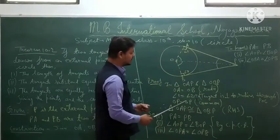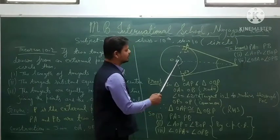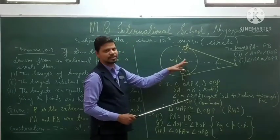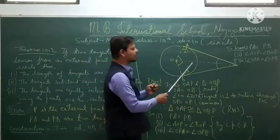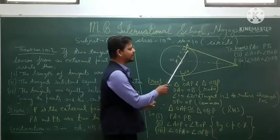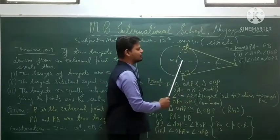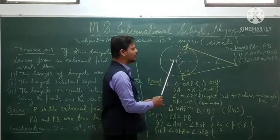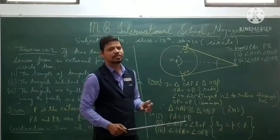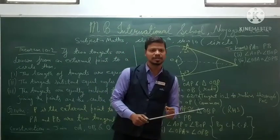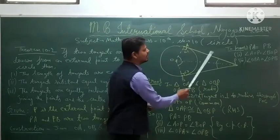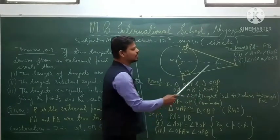OP equals OP because OP is the common side in both triangles. So we have made both triangles congruent. The two triangles are congruent by RHS congruency — two triangles congruent ho gaye hain by RHS congruency.